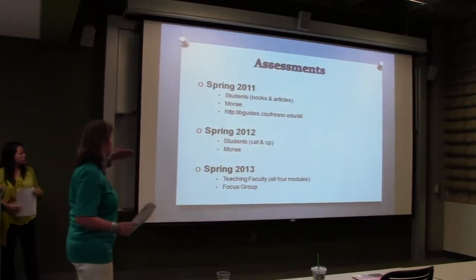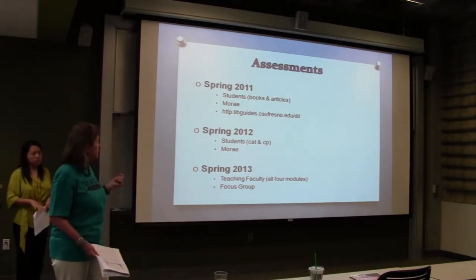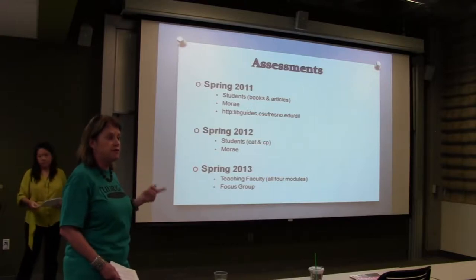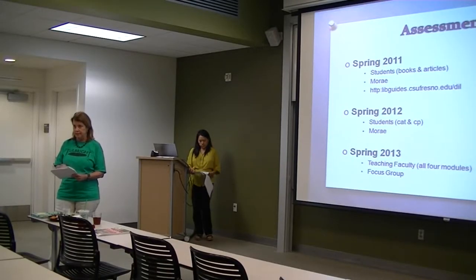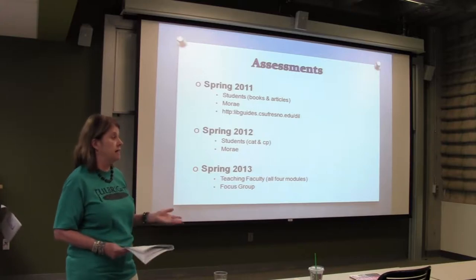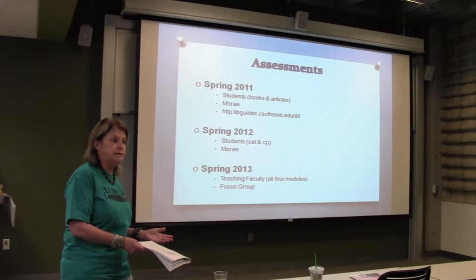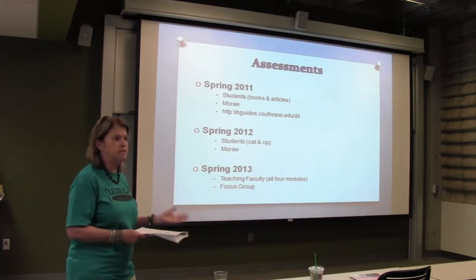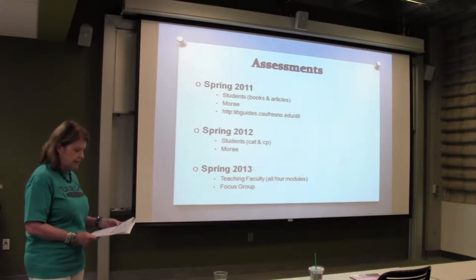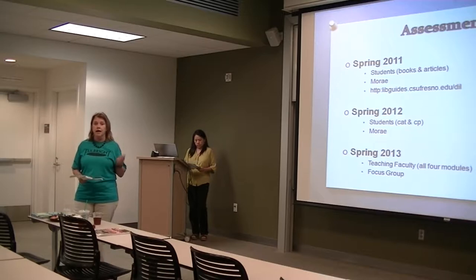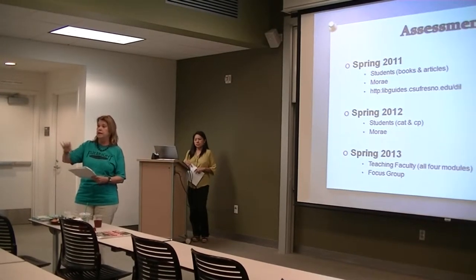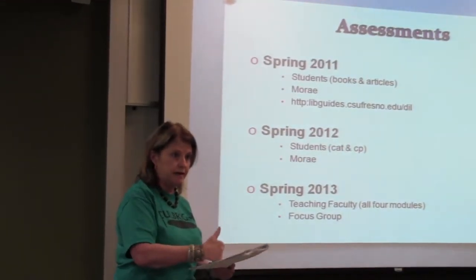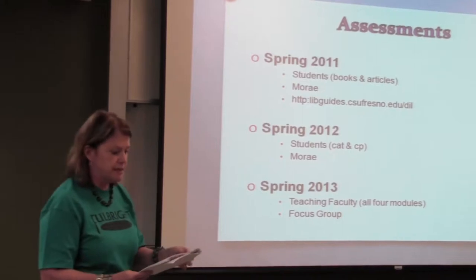I'll give you background on our past assessments. In spring 2011, we had students evaluate the books and articles database using Moray, a tracking system. We had them complete 10 tasks, videotaped them, and had them think aloud so we could see exactly where they failed or succeeded, followed by a survey. Students passed all tasks except searching Academic Search Premier — they got confused by the Google search interface. Even though the database explained how to navigate the five steps, they could not apply it.